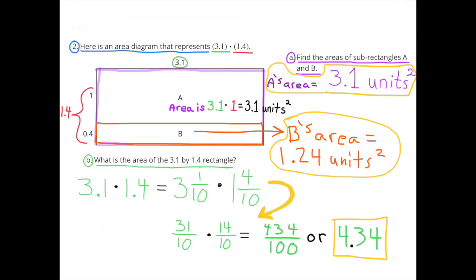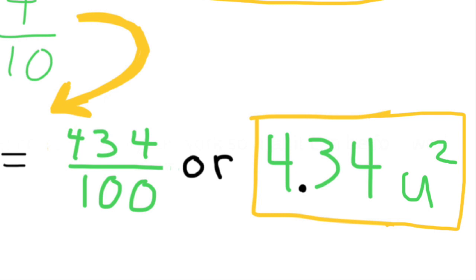Number 2B. What is the area of the 3.1 × 1.4 rectangle? So I wrote it as a fraction 3.1 × 1.4, then I wrote it as an improper fraction 31 tenths × 14 tenths. That gave me 434 hundredths or 4.34. The area of the rectangle is 4.34 units squared.